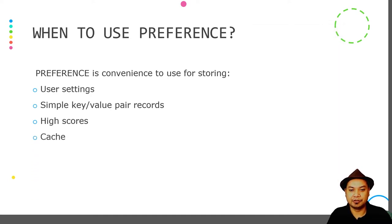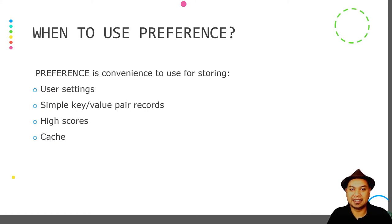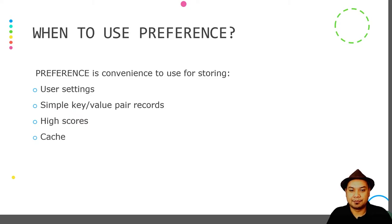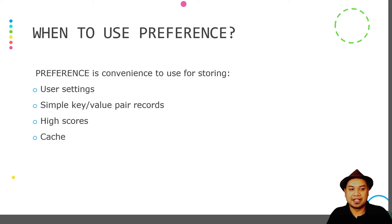Preferences is also useful for storing cache. If you download or retrieve some text from the internet, you can store that text in Preferences as a cache so that your application doesn't have to retrieve the data from the network again, saving network trips and data usage.